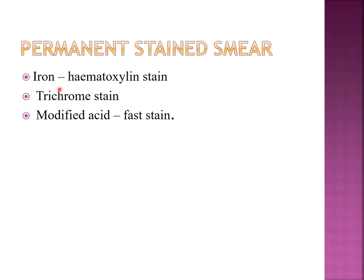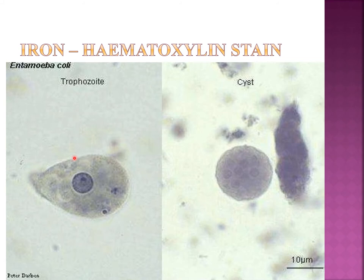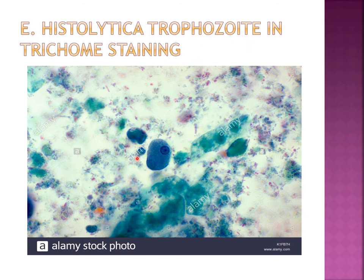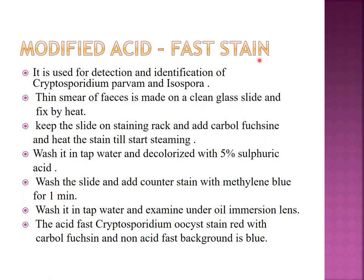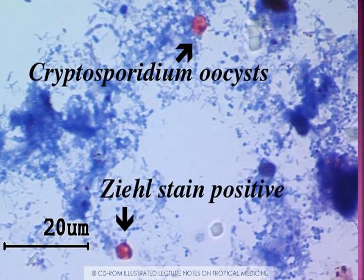There are permanent stained smears such as iron hematoxylin, trichrome stain, and modified acid-fast stain for diagnosis of various parasitic ova and cysts. Iron hematoxylin stain shows trophozoite and cyst of Entamoeba coli, identified by more than four nuclei present. Entamoeba histolytica trophozoite in trichrome stain appears accordingly. Modified acid-fast staining is done for identification of Cryptosporidium parvum, Isospora, and Microsporidia — parasites commonly found in immunocompromised patients. The background appears blue while the parasite is pinkish-red.